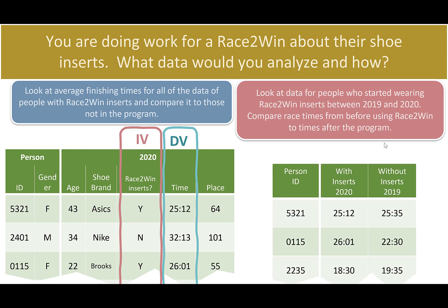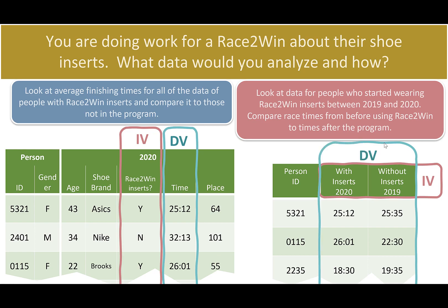With this paired approach, our data looks different. Person 24-01 isn't included because they didn't wear inserts in 2020. But 53-21, 0-115, and 22-35 are all people who didn't wear inserts in 2019 but did in 2020 — and we see their times for each year. Our independent variable is with or without inserts, and our dependent variable is all those times. We either have each person measured once (left scenario) — they either wore inserts or they didn't — or each person is measured twice (right scenario), both with and without the inserts.